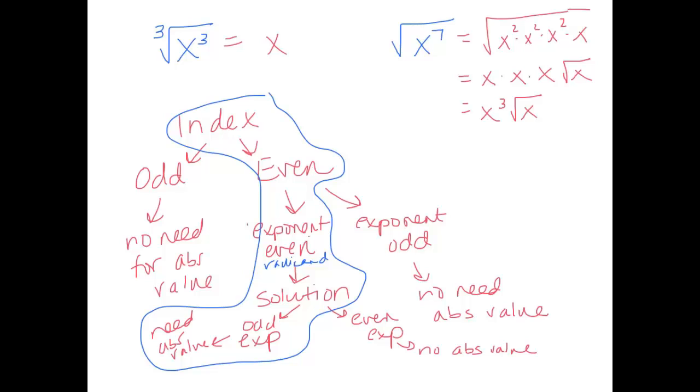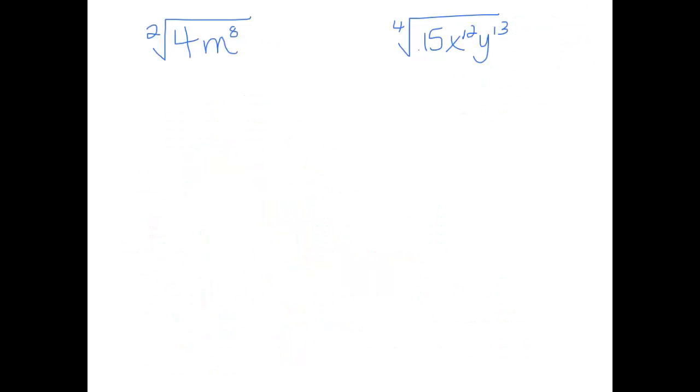Let's try another example. So here for our last two examples, notice both examples have an even index. On the first example, we have an even index and an even exponent inside the radicand. So it's like a warning flag, like beware we might need absolute value.